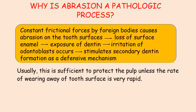Loss of enamel causes exposure to dentine, which results in irritation of the odontoblasts and stimulates secondary dentine formation as a defensive mechanism. Usually this is sufficient to protect the pulp, unless the wearing of the tooth surface is very rapid, which results in abrasion facets.